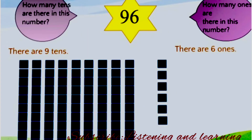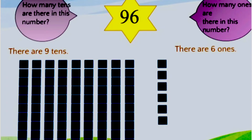The second number is 96. We check how many tens are there in this number by counting the blocks: 1, 2, 3, 4, 5, 6, 7, 8, 9. There are 9 blocks. Each block contains 10 ones, that is 1 ten. So in number 96 there are 9 tens. 9 tens are 90.